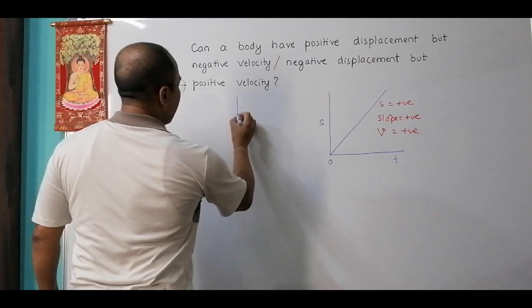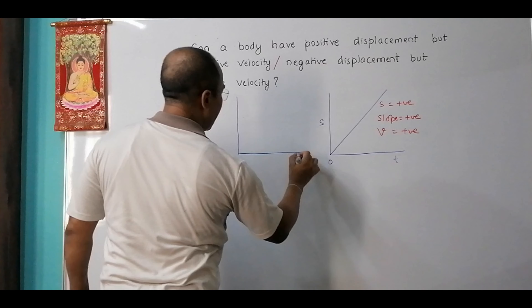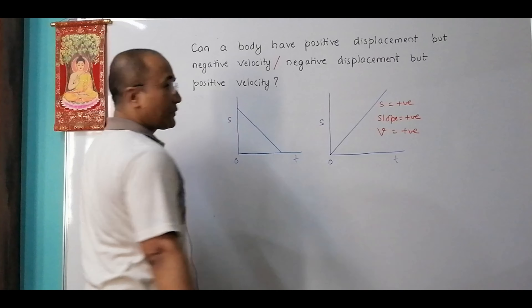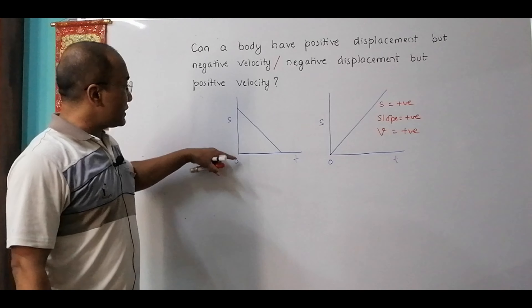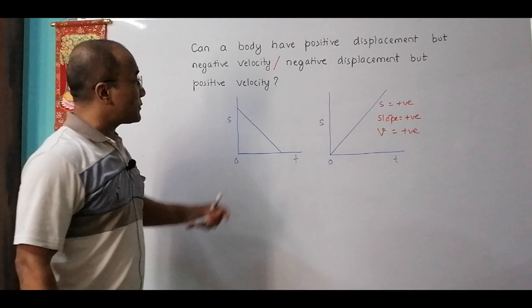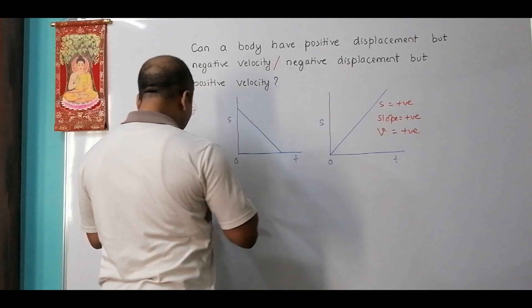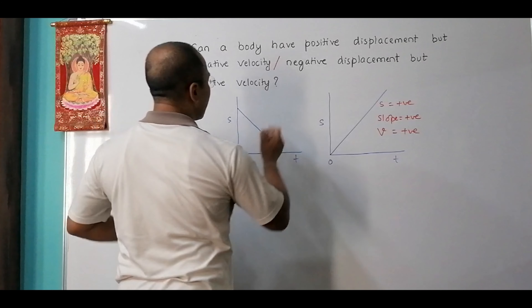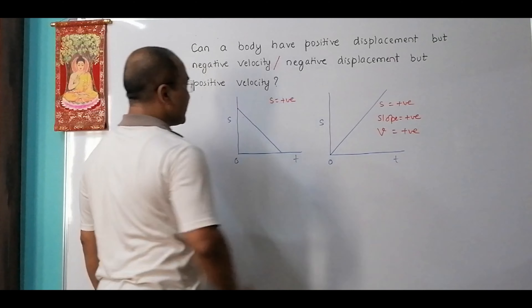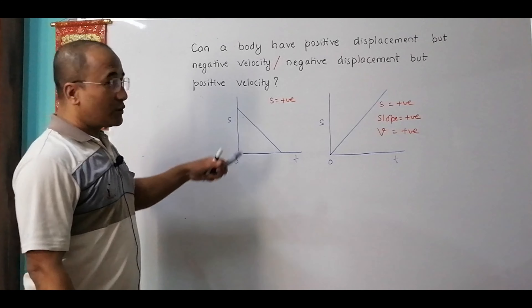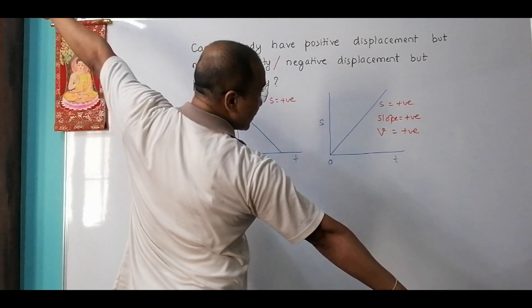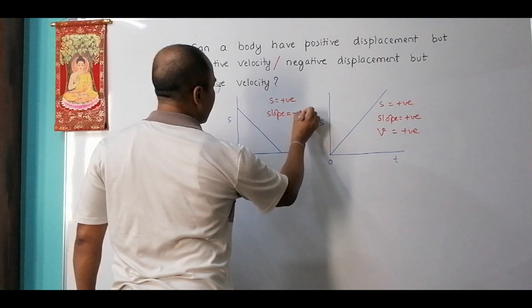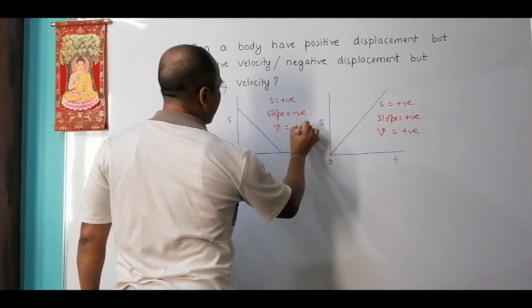On a displacement-time graph, the slope equals velocity. I tell students: if your right hand goes up and the left hand goes down, the slope is positive. In this type of graph with a positive slope, slope = positive, which means v = positive. And here s — the displacement — is also positive throughout.